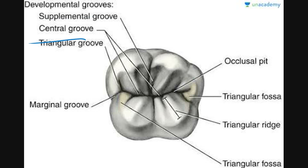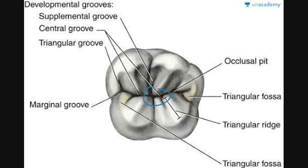The supplemental grooves are very fine. The central groove is in the middle, and the triangular grooves can be seen in a triangular shape. There are also marginal grooves present at the margins, an occlusal pit at the center point, and triangular fossa and triangular ridges — all of these are different names of developmental grooves.